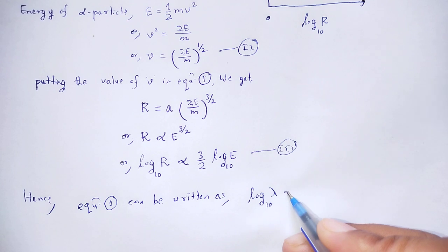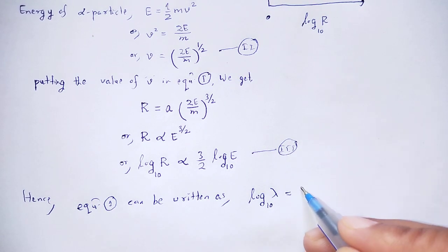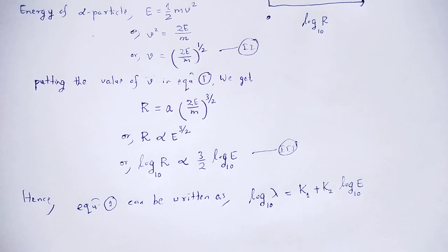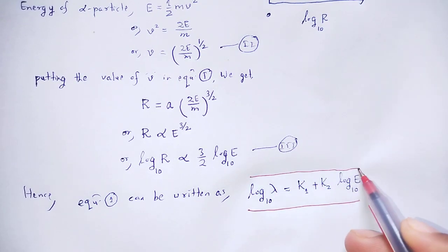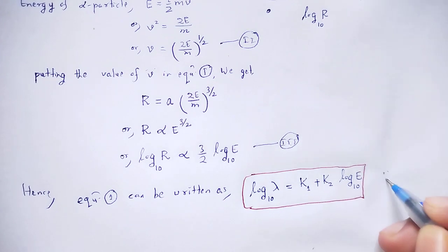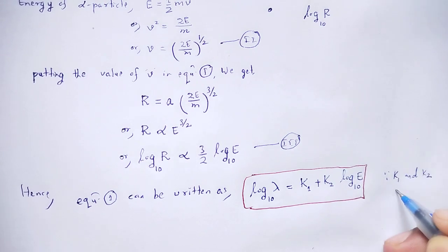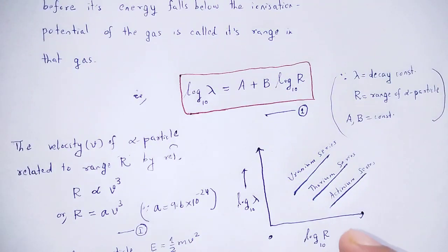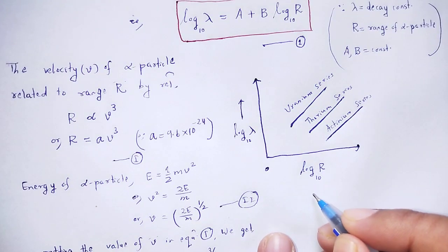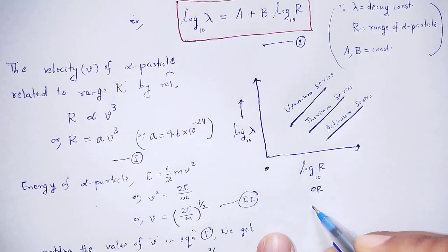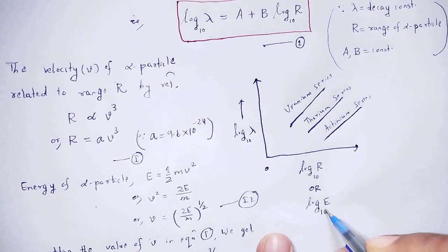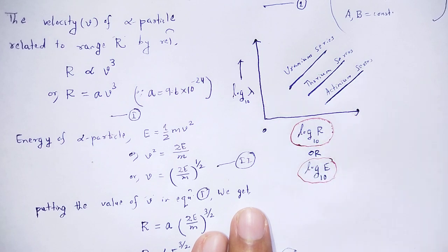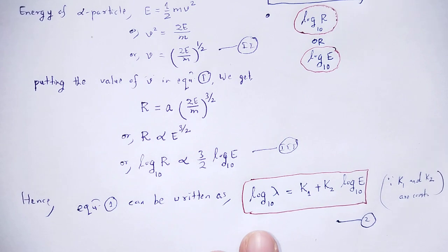Log lambda base 10 is equal to a constant K1 plus another constant K2, where K1 and K2 are constants. This is equation number 2. Similarly, the graph of log R versus log lambda, and the graph of log E versus log lambda, confirm the same Geiger-Nuttall law relation.